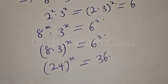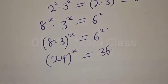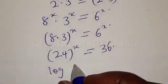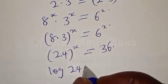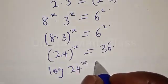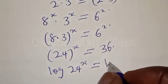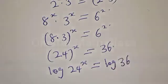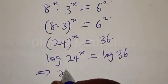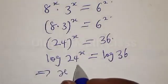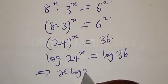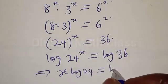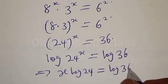Now let's take the log of both sides. Therefore we have: log of 24 raised to power x equals log of 36. Applying the power rule: x times log 24 equals log 36.